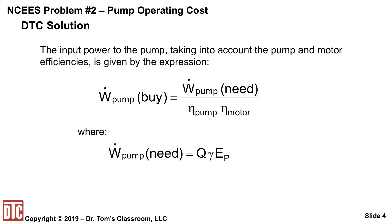The power that we actually need is W-dot — the required power — which equals W-dot-need divided by the two efficiencies: the efficiency of the pump times the motor efficiency. And W-dot-need is our familiar Q gamma E sub P.